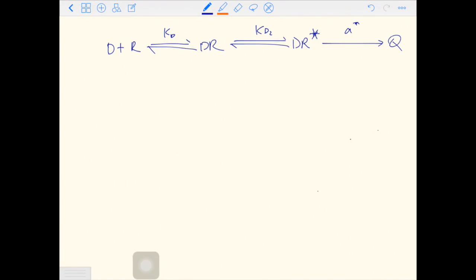We call it D2, and this is D1. You can probably see now the amount of response is determined by how much DR star there is. The equilibrium between DR and DR star plays the crucial role in the amount of response the system can generate.